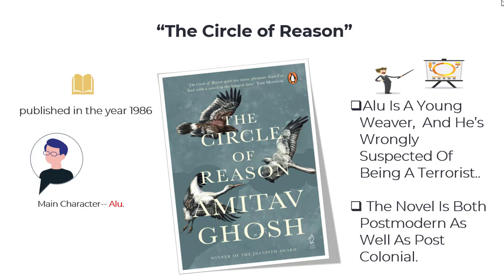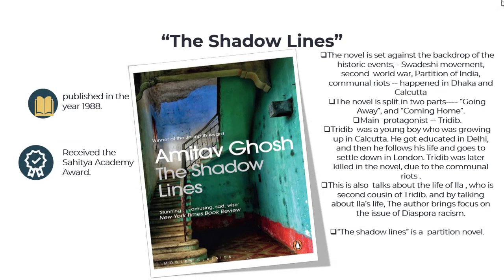The next work is The Shadow Lines, published in 1988. For this work, Amitav Ghosh received the Sahitya Akademi Award. The novel is set against the backdrop of historical events like the Swadeshi movement, the Second World War, the Partition of India, and communal riots in Dhaka and Kolkata. The novel is split into two parts: the first part is 'Going Away' and the second part is 'Coming Home.'